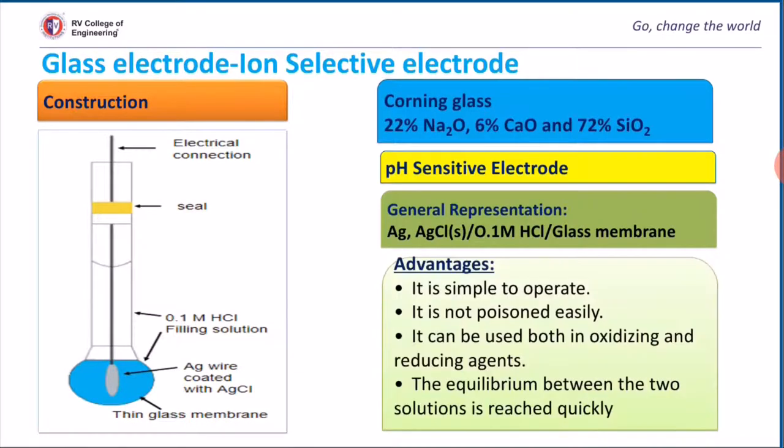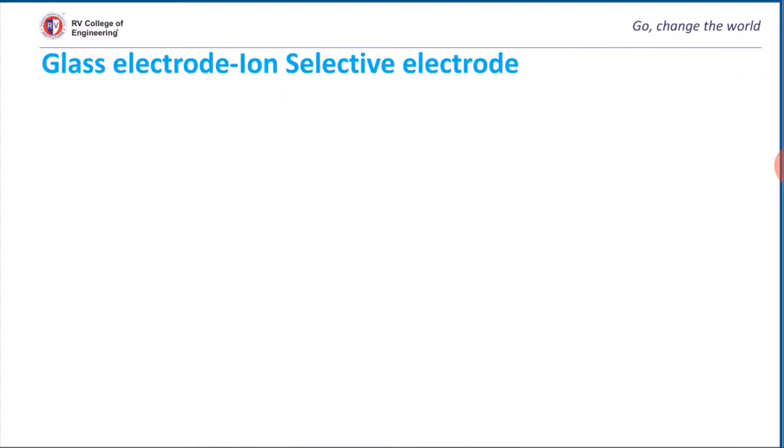Let us see a few advantages. It is simple to operate. It can be used in presence of oxidizing agent as well as reducing agent. It requires less chemicals and quickly measures the pH of the given solution. Attainment of equilibrium between two solutions is reached very quickly.